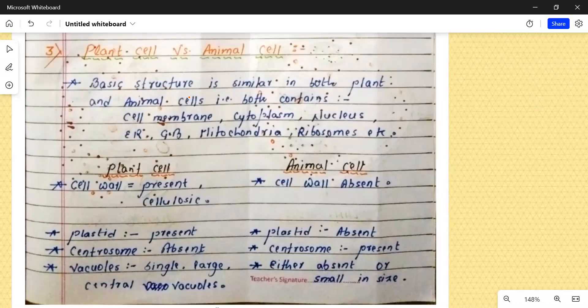Animal cell me kya-kya differences hote hai. First of all, we need to remember that basic structure, jo basic structure hote hai, woh basically similar hote hai plant mein bhi aur animal mein bhi.